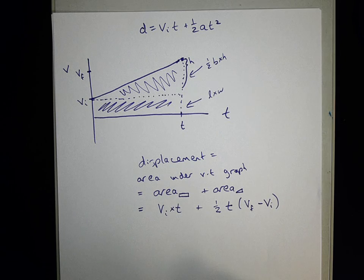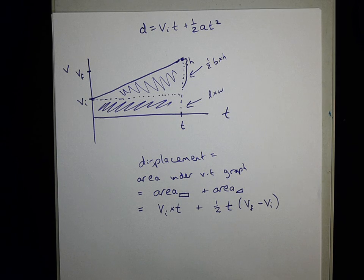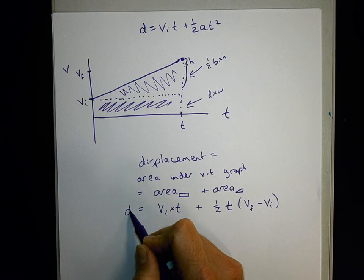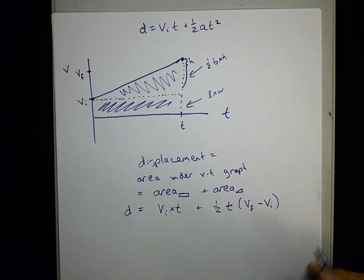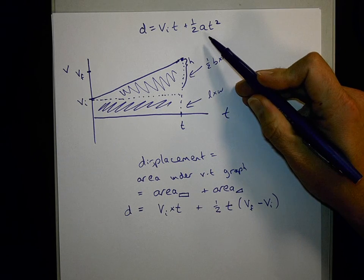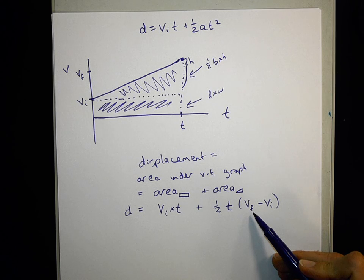This is a totally fine expression for displacement, it just doesn't look like the one up top that we're aiming for. If I stopped here and said I derived an expression for displacement, it'd be fine. It's just that notice the one we're aiming for has a in it, not v_f in it.